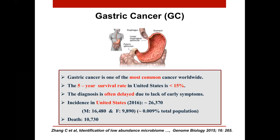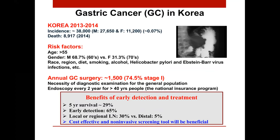Our major focus was on gastric cancer studies. Gastric cancer is one of the most common cancers worldwide, with a five-year survival rate in the United States of less than 15 percent. Diagnosis is often delayed due to lack of early symptoms, so it is usually detected at a very late stage. The incidence in the US is not so high, but in Korea it is very prevalent. Contributing factors include age over 55, male sex, smoking, alcohol consumption, and bacterial infections such as Helicobacter pylori and Epstein-Barr virus. Korea developed a national insurance program to perform endoscopy every two years for all people over 40.